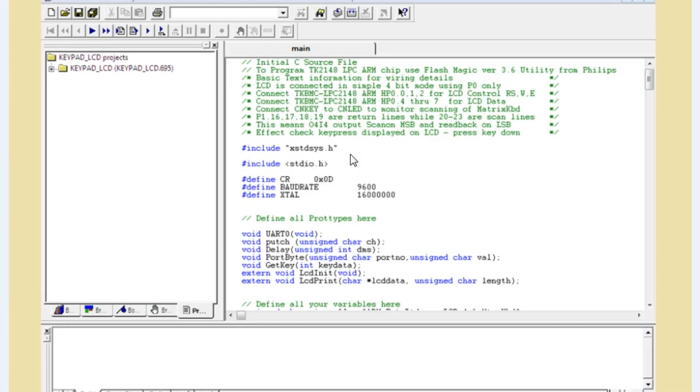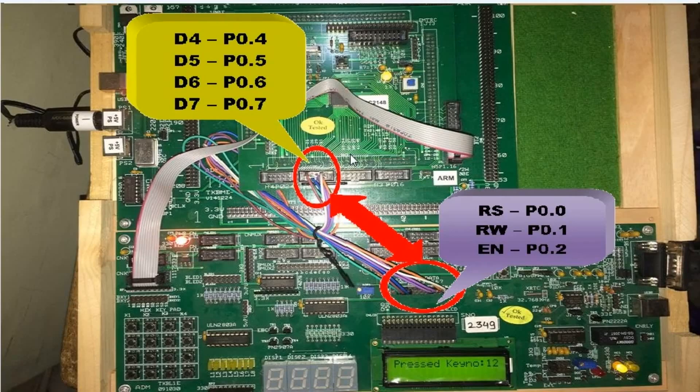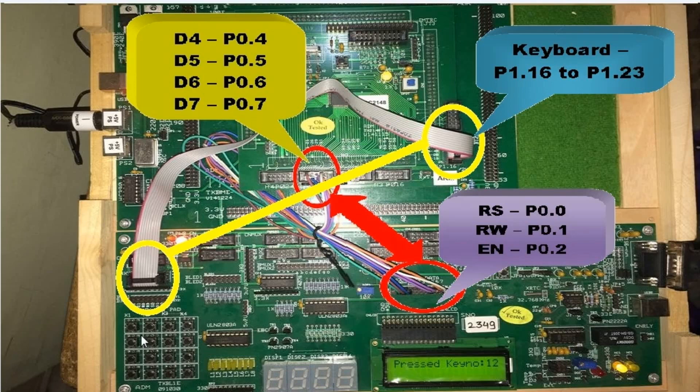Download the code into the microcontroller and do the following connections. Connect LCD RS, read/write and enable pins to P0.0, P0.1 and P0.2 pins respectively, and D4 to D7 pins of LCD to P0.4 to P0.7 of port 0 respectively. Next, connect this keyboard to P1.16 to P1.23 pins with the help of FRC cables. Now, let's see the output.